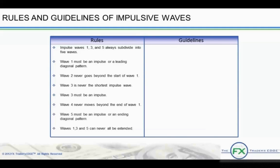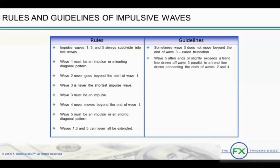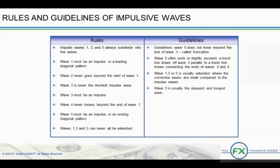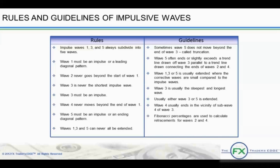And now for some guidelines. 1. Sometimes wave 5 does not move beyond the end of wave 3 — this is called truncation. 2. Wave 5 often ends or slightly exceeds a trend line drawn off wave 3 parallel to a trend line drawn connecting the ends of waves 2 and 4. 3. Wave 1, 3, or 5 is usually extended where the corrective waves are small compared to the impulse waves. 4. Wave 3 is usually the steepest and longest wave. 5. Usually either wave 3 or 5 is extended. 6. Wave 4 usually ends in the vicinity of sub-wave 4 of wave 3. 7. Fibonacci percentages are used to calculate the retracements for waves 2 and 4. 8. Fibonacci ratios are used to target the end of waves 3 and 5.